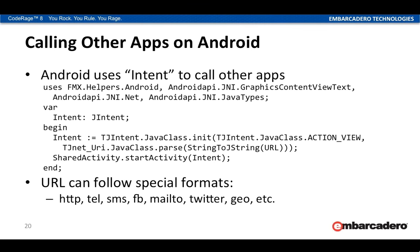Now let's talk about how we can call other apps on Android. Android uses what's called an intent — an object passed between activities or Android applications. In Android, each screen is a separate activity, and each application has an activity as well. The intent is passed back and forth between these activities to pass information between them. An intent is what we use to tell another application to do something.